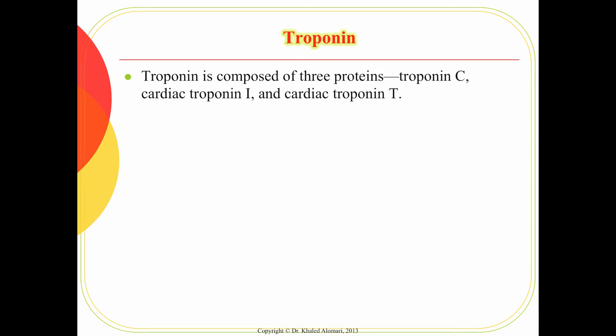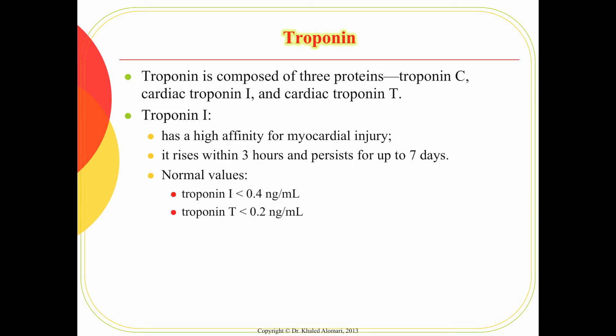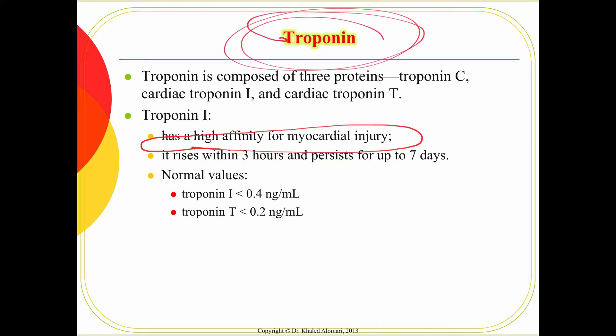Troponin comes in three types but we follow two in the hospital. Troponin sits between the myocytes themselves, so an elevation is very sensitive and specific to the heart. That's why troponin is the primary marker we use when we suspect MI — it has a very high affinity or correlation to the myocytes, making it the most sensitive test for myocardial infarction.